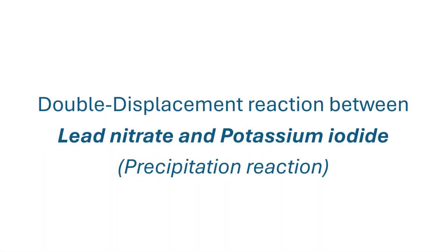The reaction between lead nitrate and potassium iodide solution is an example of a type of double displacement reaction known as a precipitation reaction.